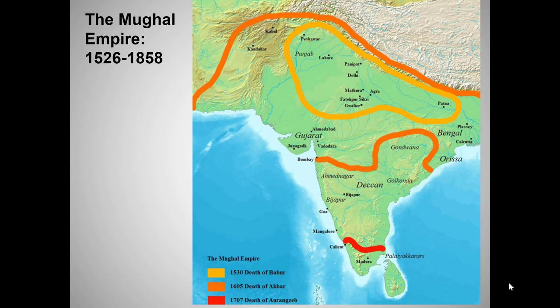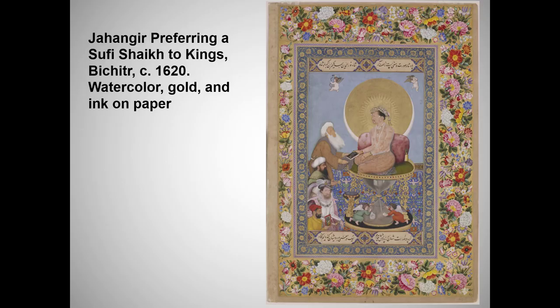His grandson Akbar conquered even more of India and was widely renowned as a fair and efficient ruler who extended protection and religious liberty to his largely Hindu subjects. Jahangir, whom we'll meet in just a minute, was Akbar's son, and Jahangir's son, Akbar's grandson Shah Jahan, built the Taj Mahal as a mausoleum for his wife and later himself.